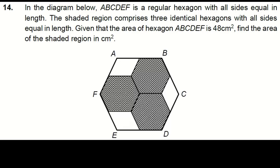Moving on to question 14. ABCDEF represents a regular hexagon with equal side lengths. The shaded area comprises 3 identical hexagons. Given the area of hexagon ABCDEF as 48CM square, we aim to find the area of the shaded region.